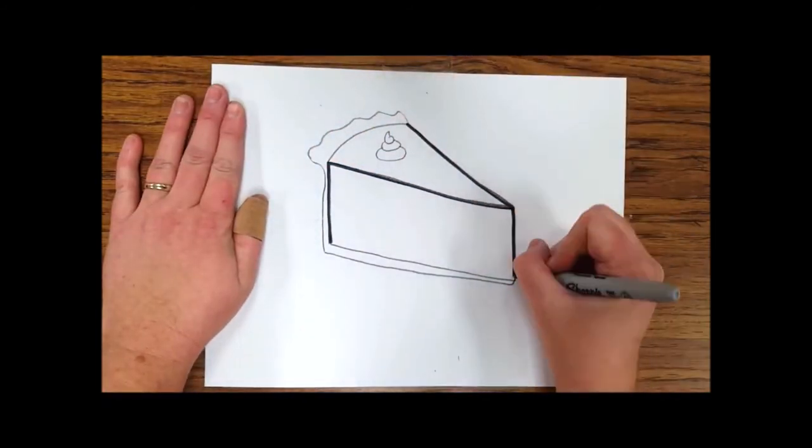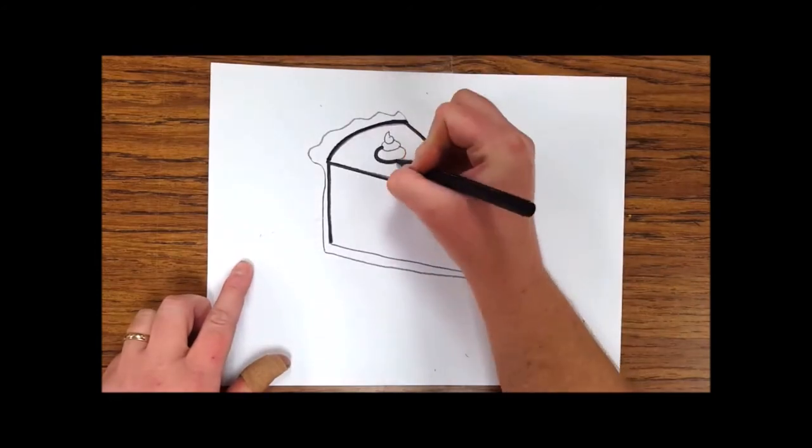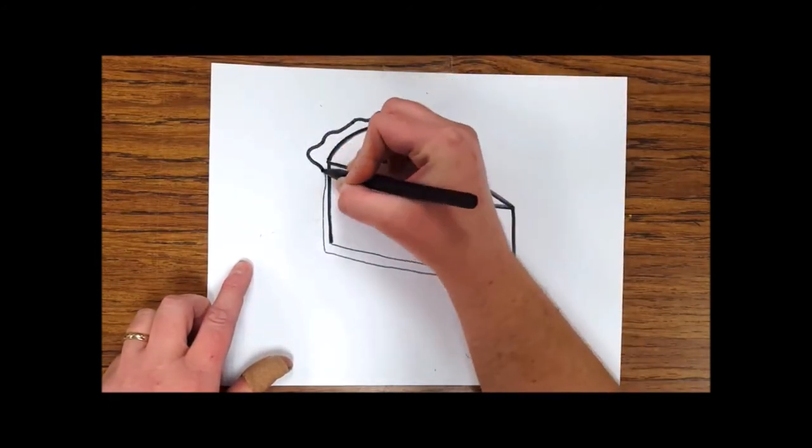While I trace with Sharpie, I'll think about what sort of pie I want to make this. You could do peach, blueberry, or any sort of pie you want. I'm going to make mine into a pumpkin pie.